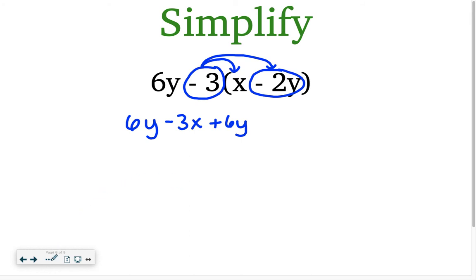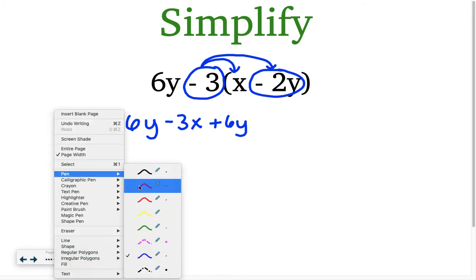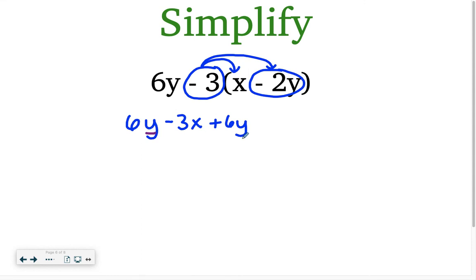Now I look at this and I say, do I have any terms that can be combined? I see a y here and I see a y here. Since they're regular y's, they're not y squared or anything. They're exactly the same. I can say 6 plus 6, which is 12y and then minus 3x. And that is going to be my simplest form because I cannot combine x's and y's together.